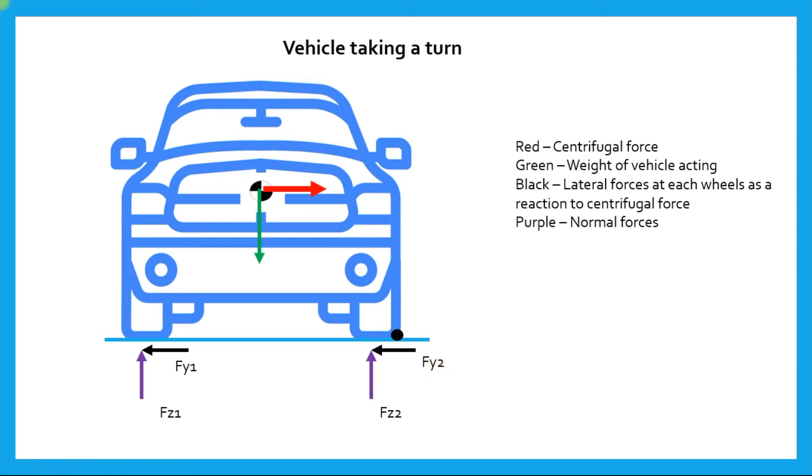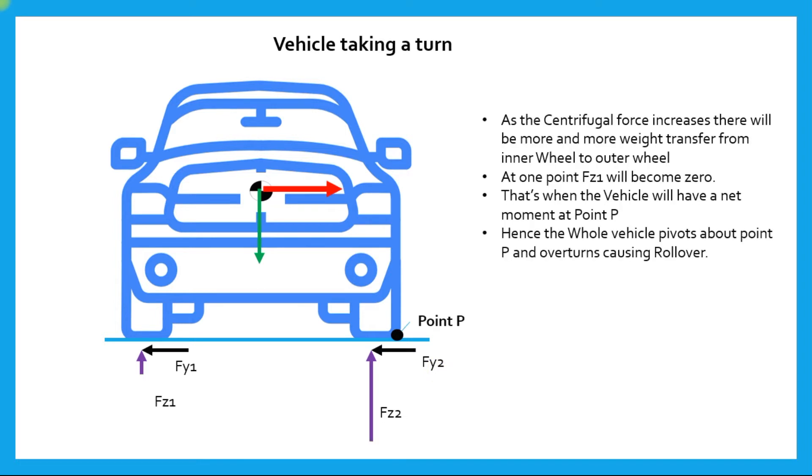This is the state of the vehicle when it is taking a turn. When the centrifugal force keeps on increasing at the CG, the lateral shift of the vehicle—that is, the roll of the vehicle—keeps on increasing. As the roll keeps on increasing, the normal load on the outer wheels will be increasing much more compared to the inner wheels.